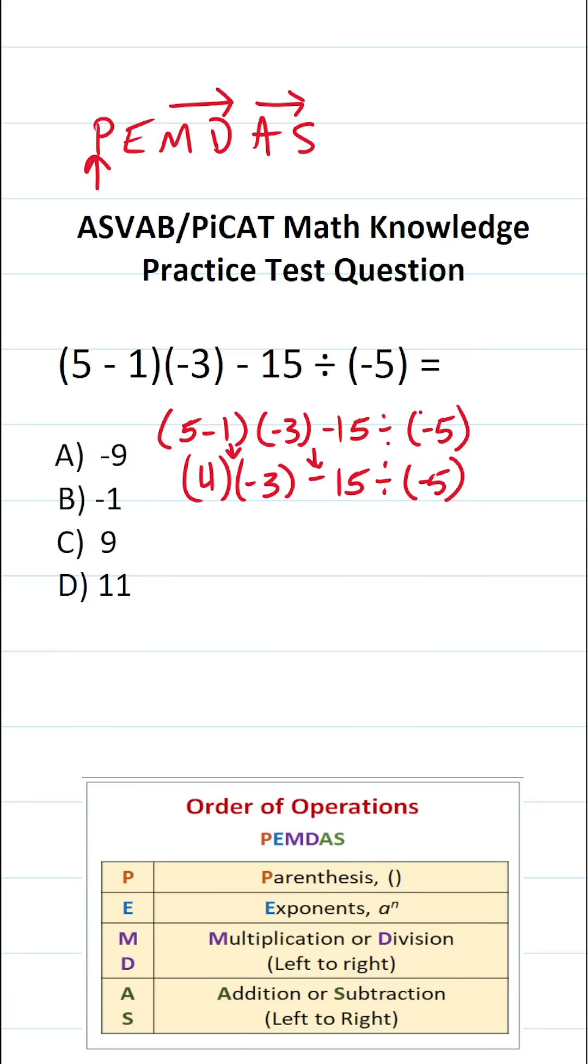Subtraction minus 15, and then division divided by negative 5. So according to the order of operations, we're going to do multiplication and division before subtraction. More specifically, we're going to do multiplication and division as they appear in the expression from left to right. So on the left-hand side of this expression, we have 4 times negative 3. So that's what we're going to work out first.